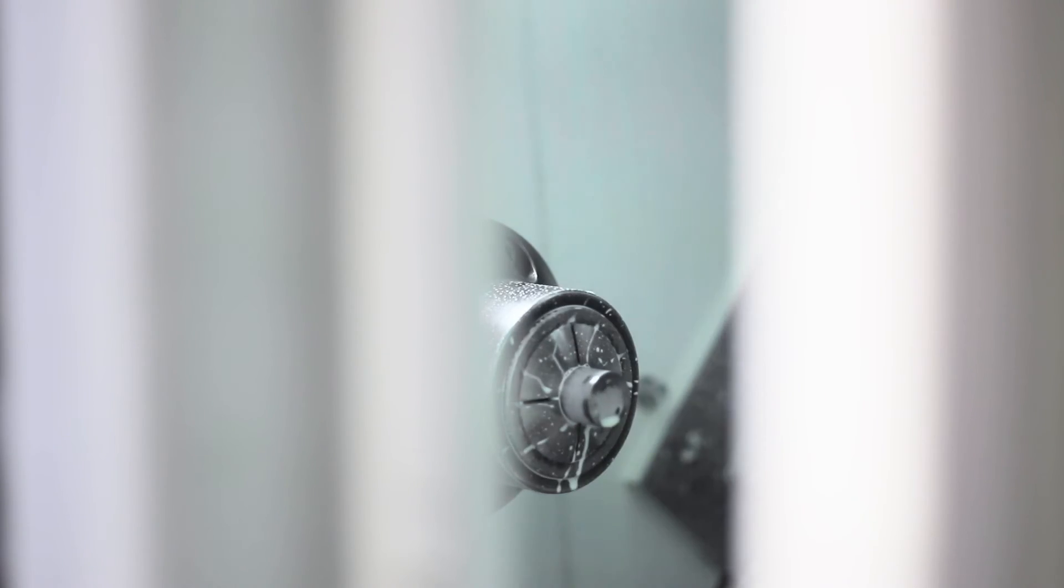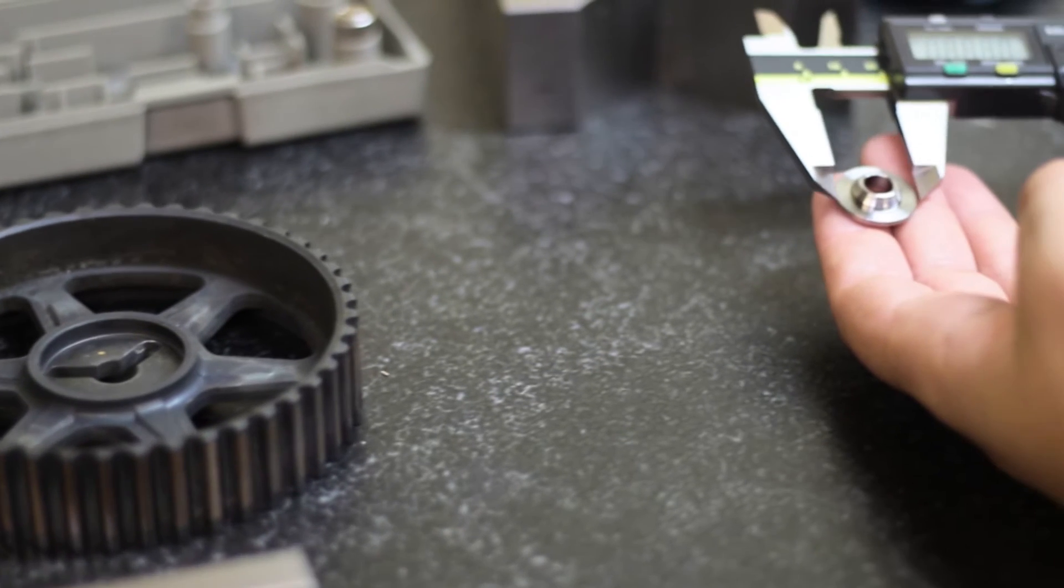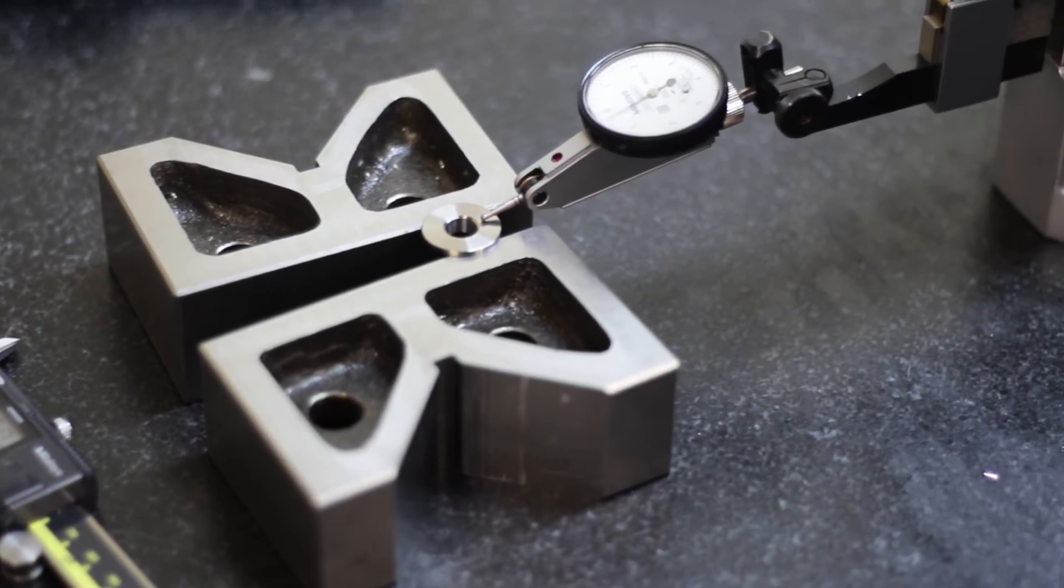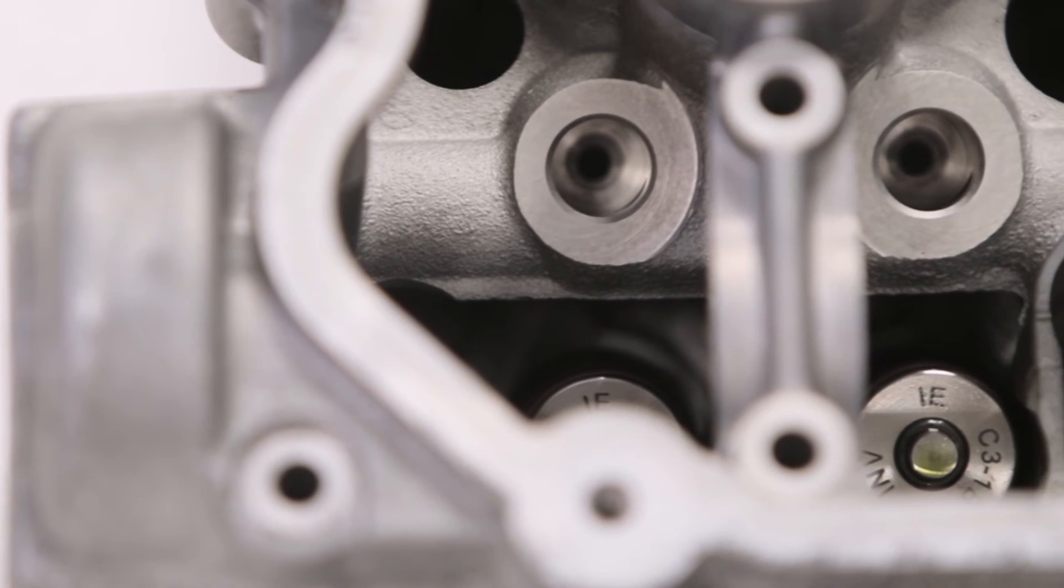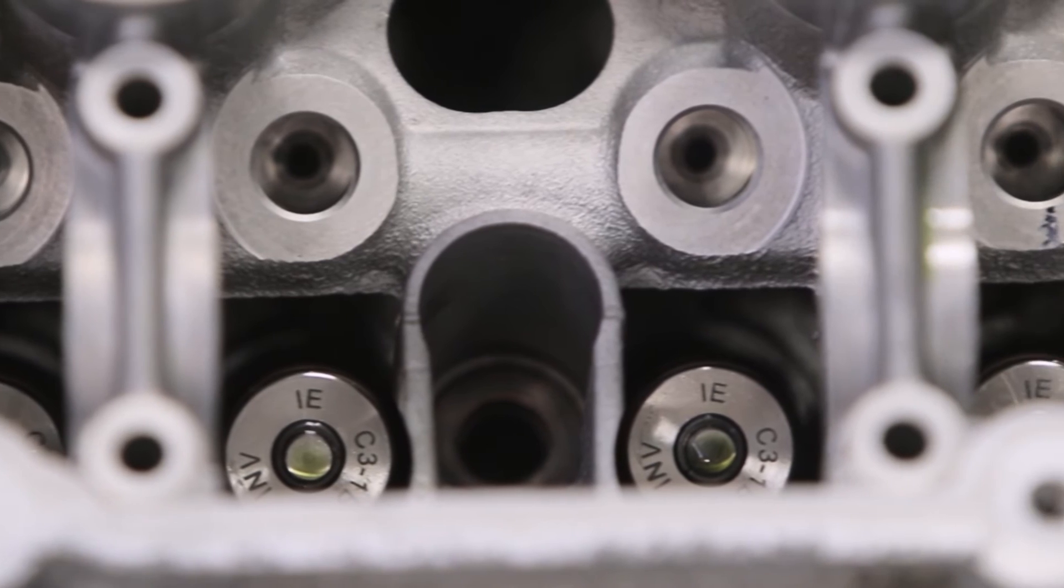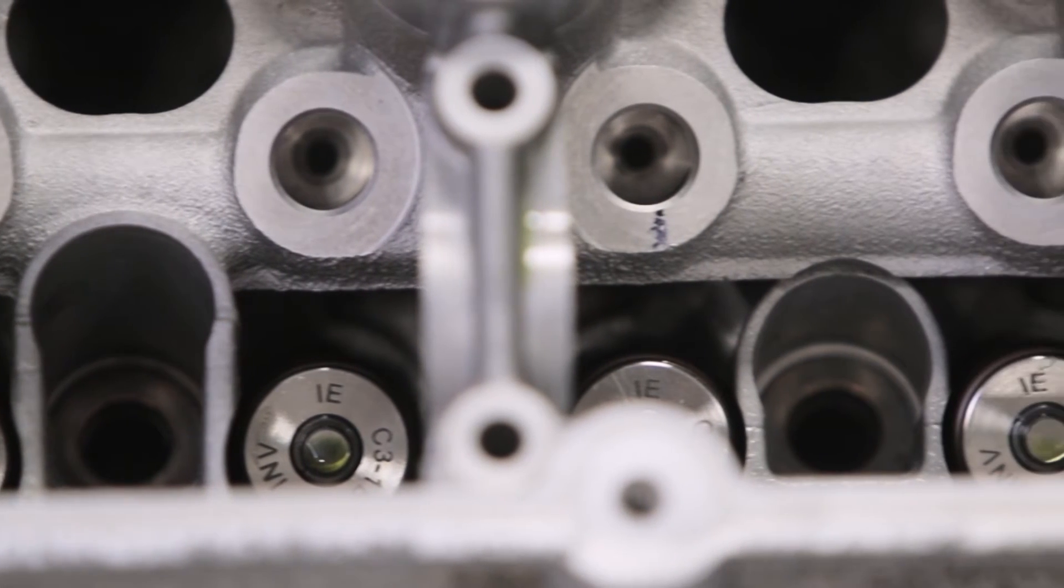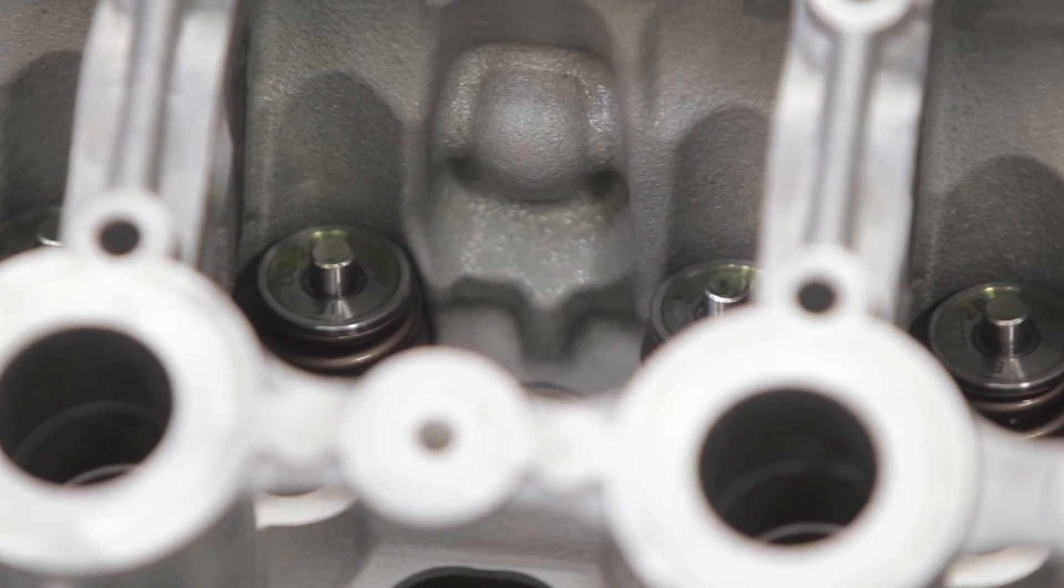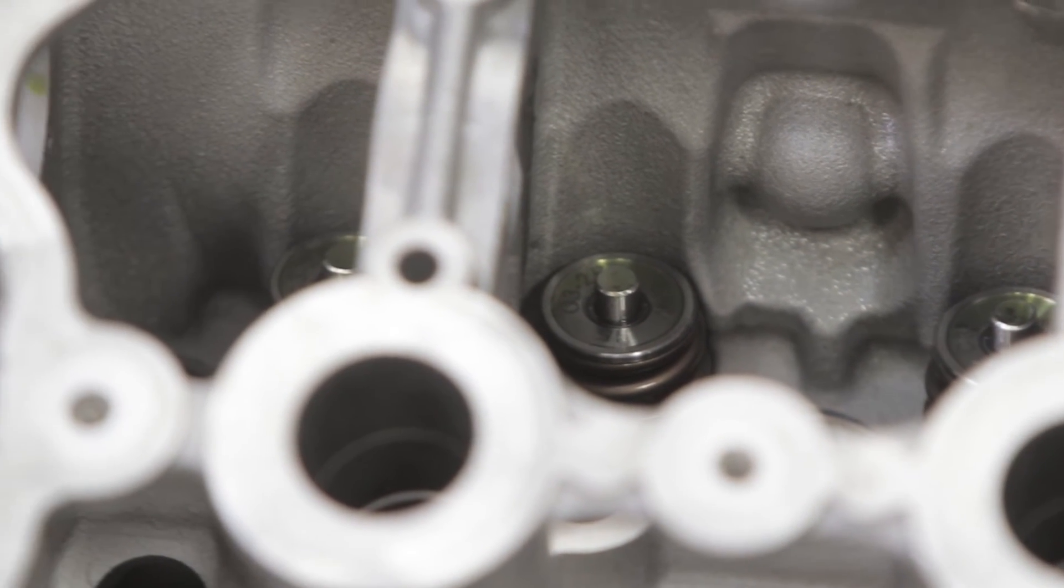Once machined, every retainer is hand-measured and verified within thousandths of an inch. Now that the retainers are machined and have passed quality control, they are set out for laser etching. Each retainer is marked with the correct part number, which differentiates the intake or exhaust side for an easier install.